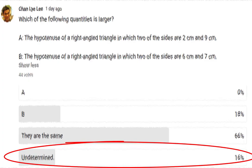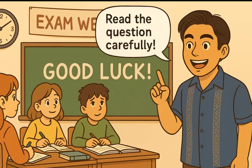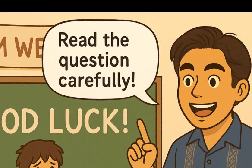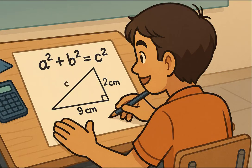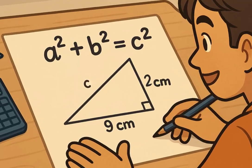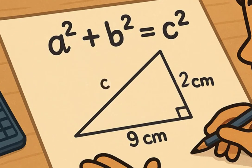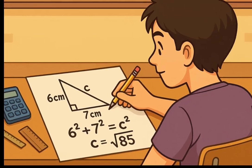This is a perfect example of how a seemingly straightforward math question can lead to misinterpretation if we don't read carefully. At first glance, many students assume that the two given sides are the legs of the triangle. If we go with that assumption, we can use the Pythagorean theorem.